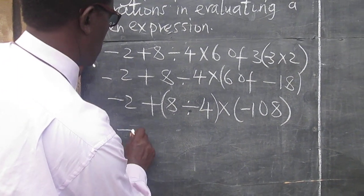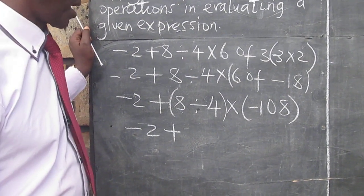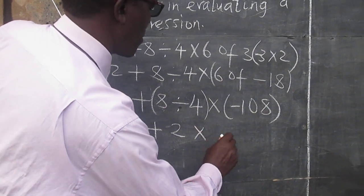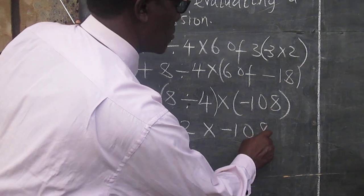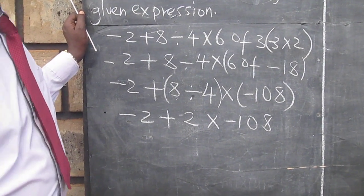So we divide 8 by 4, and that will give us 2. Then multiply by negative 108. And we are done with the division.